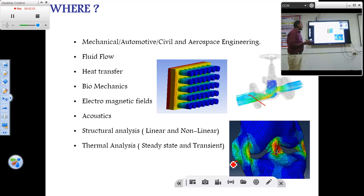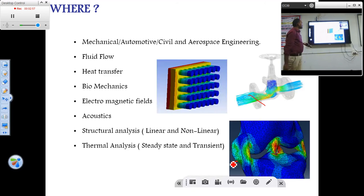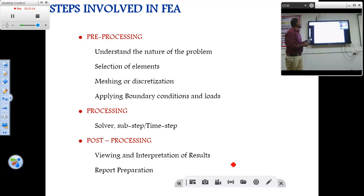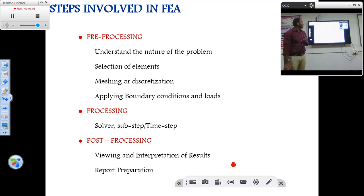The structural analysis may be linear or nonlinear. There is also thermal analysis. So what are the steps involved in FEA? There are primarily three steps: first is pre-processing, then processing, and post-processing.